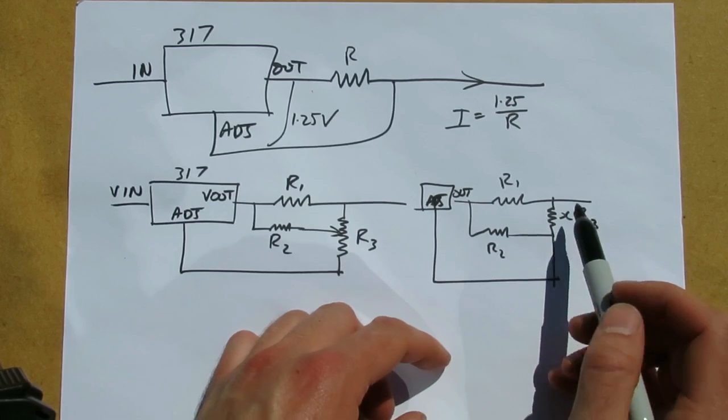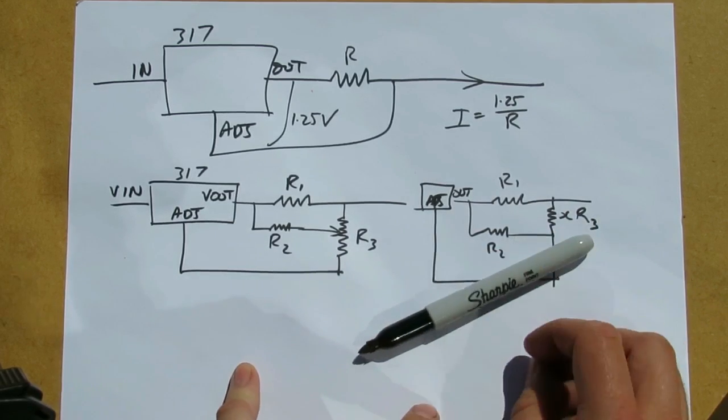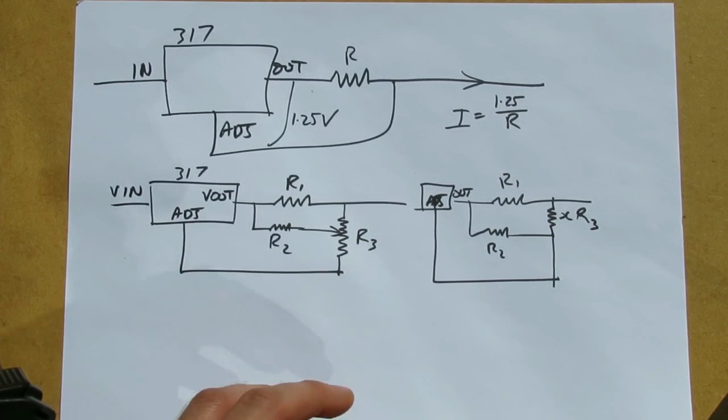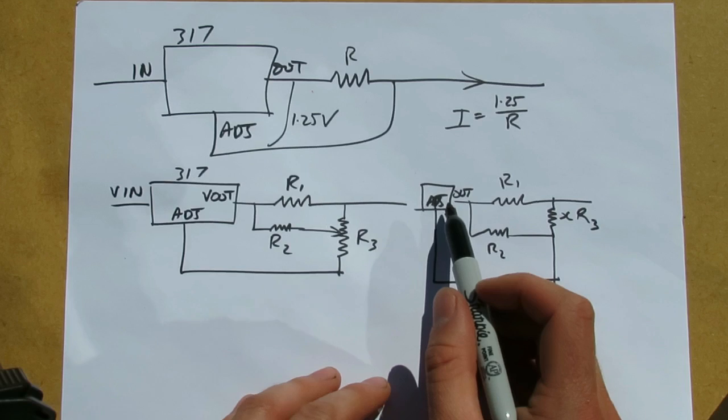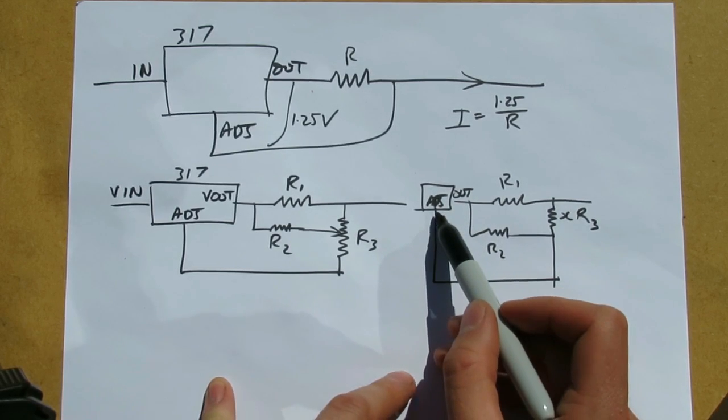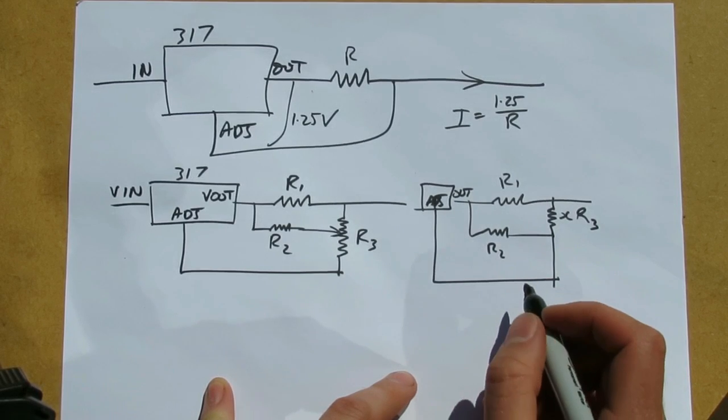X denotes the fraction of the wiper position of the potentiometer from 0 up to 1.